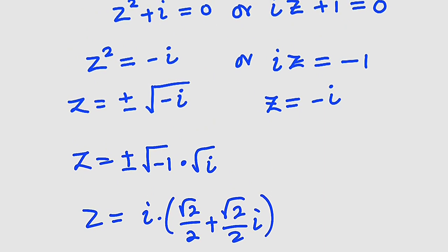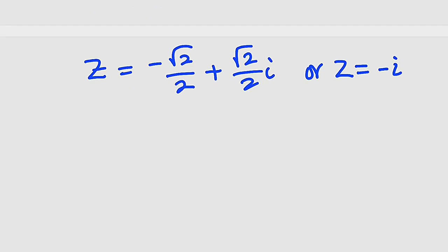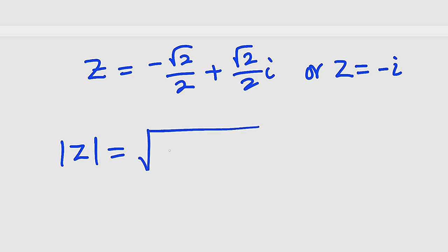Don't forget the other solution: z = -i. So we have z₁ = -√2/2 + (√2/2)i and z₂ = -i. The modulus of z is equal to the square root of the real part squared plus the imaginary part squared.